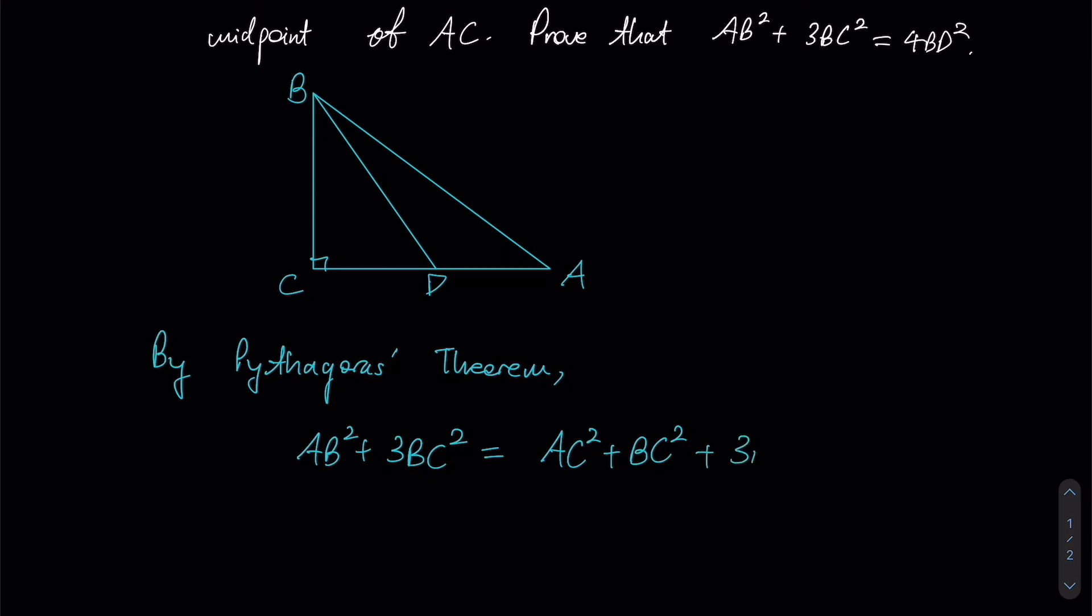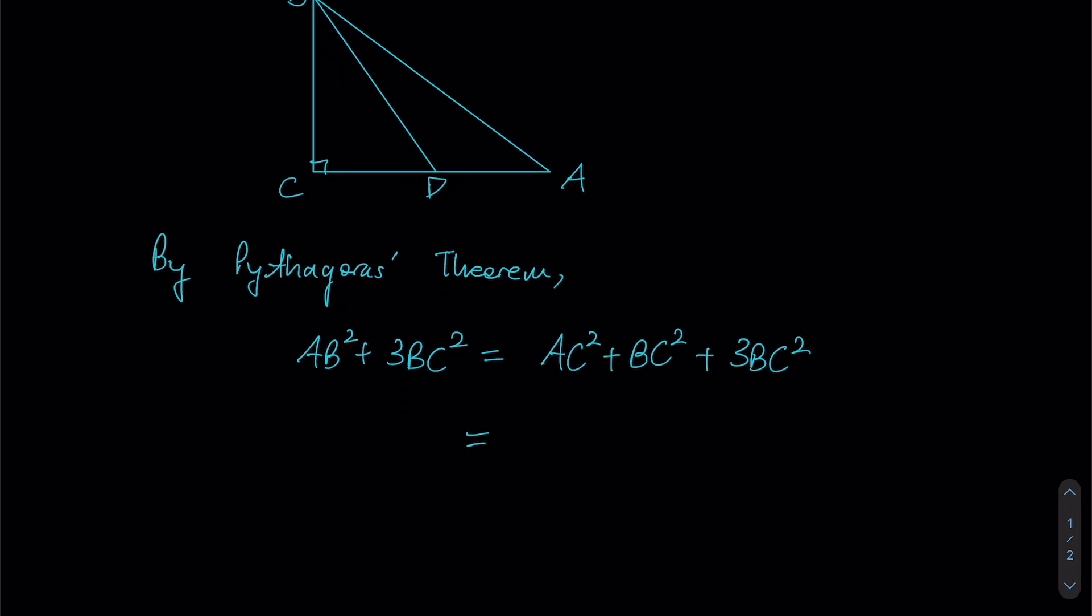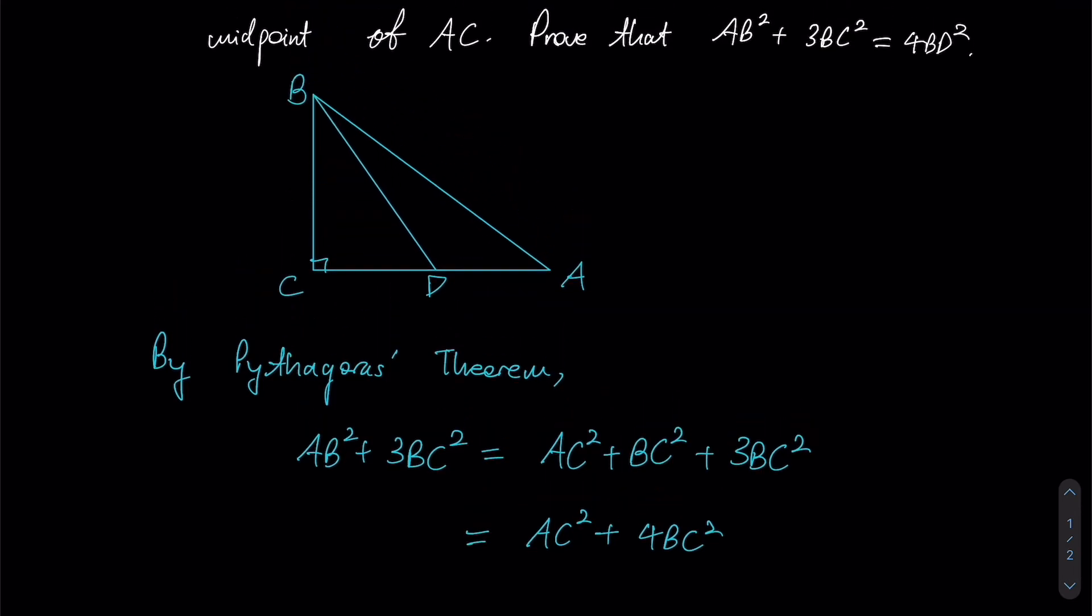And then we have 3BC² as per usual. Now, since we have BC² plus 3BC², that gives us 4BC². So we have AC² plus 4BC².